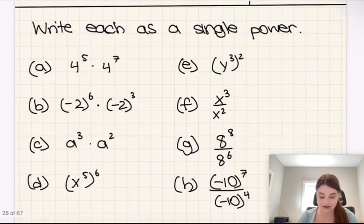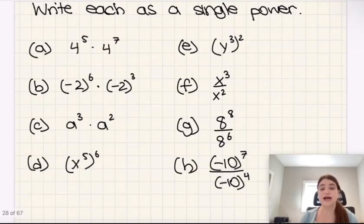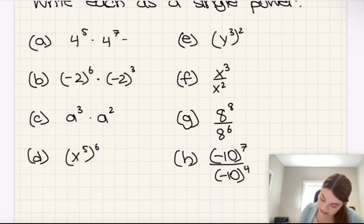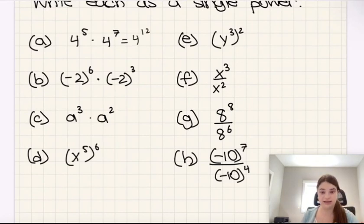Okay, so here we have an exercise of writing each of these as a single power. Let's start with 4 to the power of 5 times 4 to the power of 7. Well, that would fall into the first rule here, the product of powers. So the answer here would be 4 to the power of 12, because we just add up 5 plus 7 to get 12.